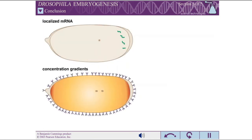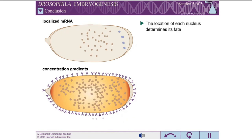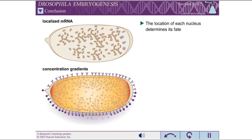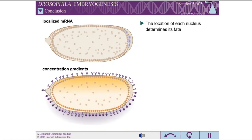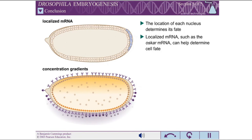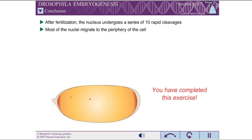When the nuclei reach the edge of the cell, they are totipotent. Just after cellularization, however, the fates of the nuclei have been irreversibly determined to differentiate into specific tissues in the adult fruit fly. This determination is accomplished through localized mRNA and concentration gradients in the Drosophila egg. You have completed this exercise.